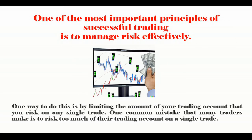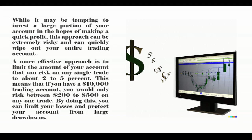One of the most important principles of successful trading is to manage risk effectively. One way to do this is by limiting the amount of your trading account that you risk on any single trade. One common mistake many traders make is to risk too much of their account on a single trade. A more effective approach is to limit the risk on any single trade to about two to five percent. This means that if you have a $10,000 trading account, you would only risk between $200 and $500 on any one trade. By doing this, you can limit your losses and protect your account from large drawdowns.